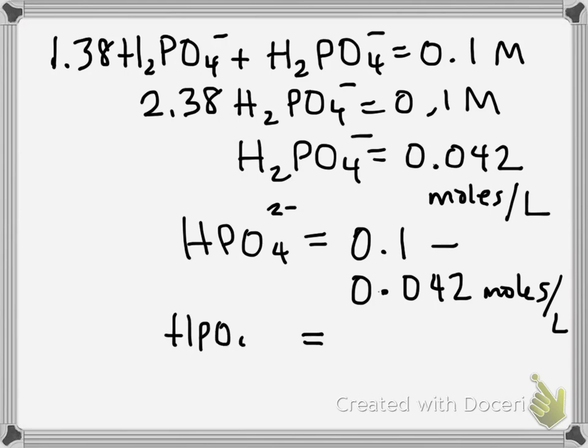So, HPO4 2 minus, you'd have 0.058 moles per liter.